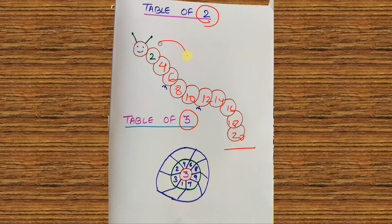In this way it has become a kind of game and also a revision of tables. For example, 3 ones are 3; 3 threes are 9; 3 twos are 6 — this became a circle puzzle. They have to solve it here — like 3 into 4, 3 into 6 is 18 — so they have to write it in this way.